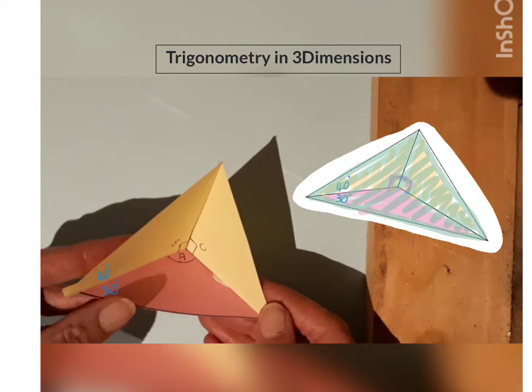Let's say we were now given these two angles, a 40-degree angle in my one vertical plane, and a 30-degree angle in my horizontal plane.